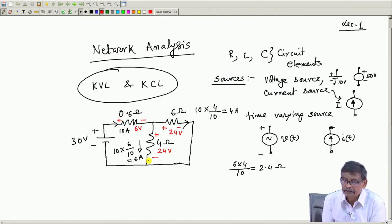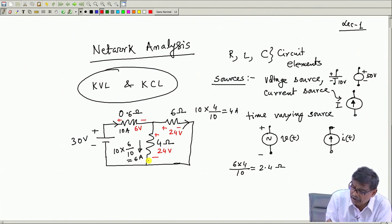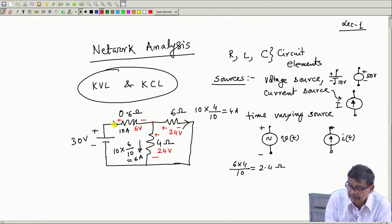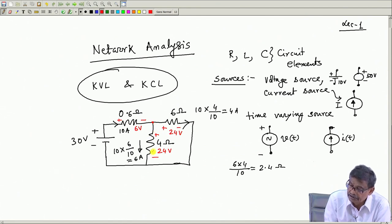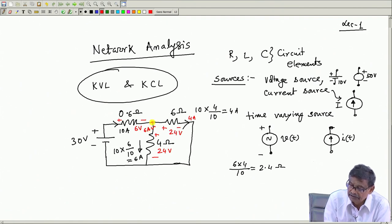Now let me verify Kirchhoff's current law. At the junction, 10 ampere comes in, and 6 ampere flows one way and 4 ampere flows the other way. So KCL is satisfied at this junction. Similarly, at the other junction, 4 ampere and 6 ampere combine to give 10 ampere — KCL is satisfied.